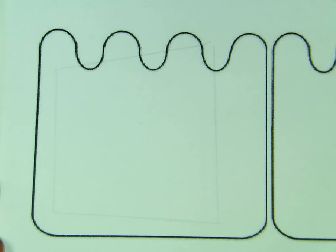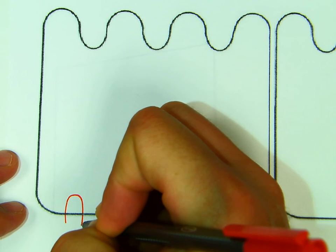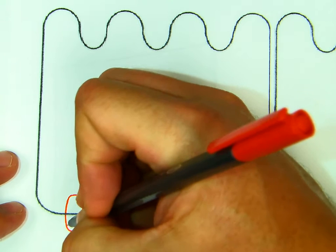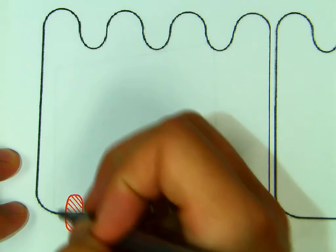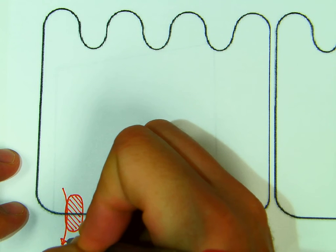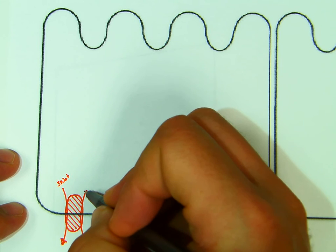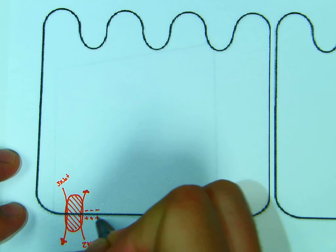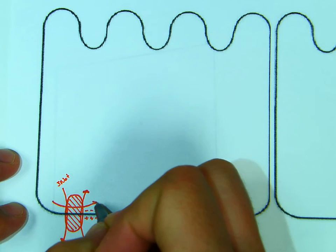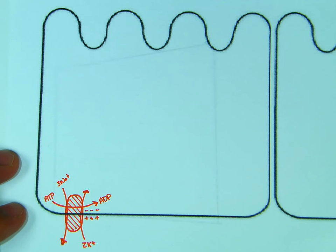So the first thing we should do on any enterocyte is go ahead and draw the sodium-potassium pump. We're going to pump three sodiums out, two potassiums in. Minus, minus, minus, plus, plus, plus. That's going to be done at the expense of ATP. And now we have our sodium gradient to allow us to transport everybody else in.